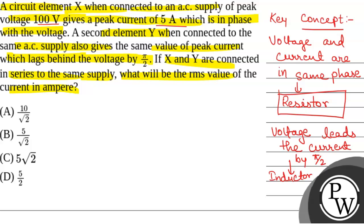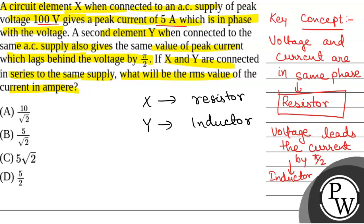So element X should be a resistor and element Y should be an inductor. Now, we have to find the R value for circuit element X. The value of resistance R_X will be peak voltage — that is 100 V — divided by peak current — that is 5 A — so this will be equal to 20 ohm.